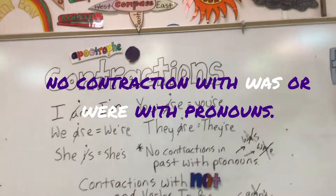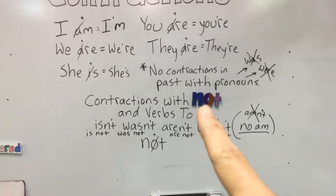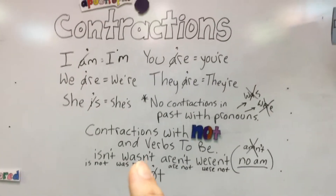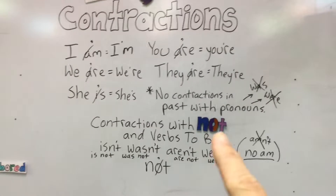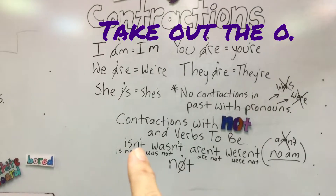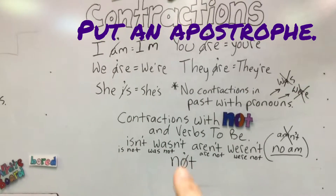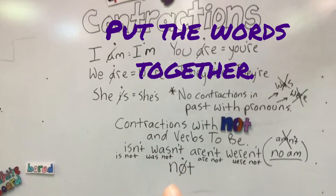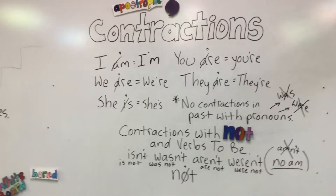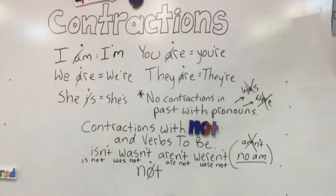We wouldn't put pronouns with was or were — not with pronouns. So look at a different kind of contraction with not. Not is a little bit like no, but we use it with verbs. Contractions with not and verb to be: you can say is and not — take out the O, put an apostrophe where the O was — isn't. Was not — take out the O — wasn't. Are not — take out the O — aren't. Were not — take out the O — weren't. But you can't make a contraction of verb to be with am — you can't say amn't. That's the one that does not work.